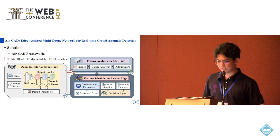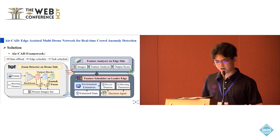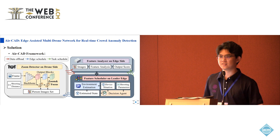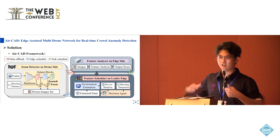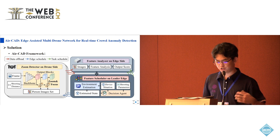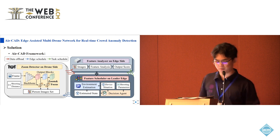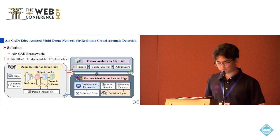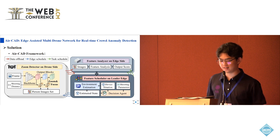ALCAD consists of three modules. On the drone side, we designed the zoom detector, which can dynamically adjust the inference depth of the model according to the shooting distance of the drones, just like a zoom camera. On the edge side, we use multi-feature analysis to find anomalies occurring in the crowd. In addition, we designed a feature scheduler to assign different feature analysis tasks to the most suitable edge devices.